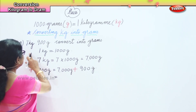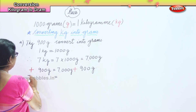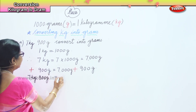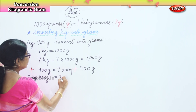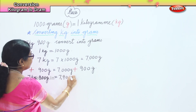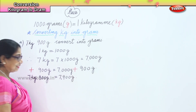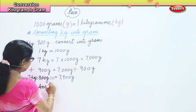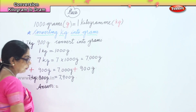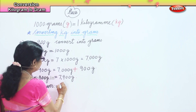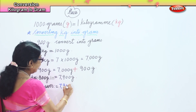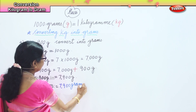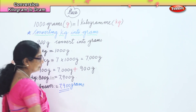So, 7 kg and 900 grams is equal to 7900 grams. That's our answer, alright?